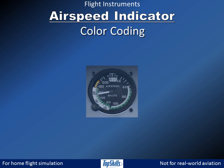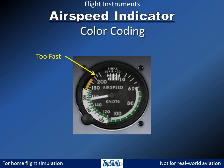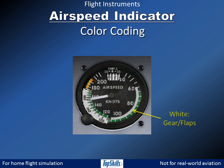The green arc indicates safe airspeeds. The yellow arc indicates a caution zone. Beyond the yellow zone are speeds that are too fast for safe operations. The red line indicates the top of the caution zone and the beginning of the never-exceed zone. The white arc indicates safe airspeeds for using landing gear and flaps. The unmarked low speeds are insufficient for flight.